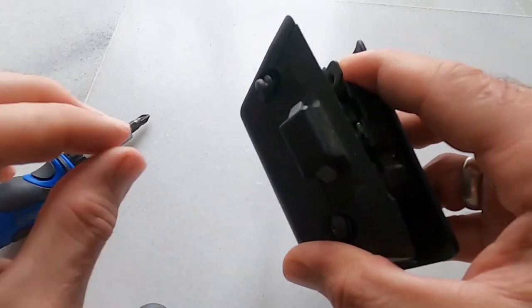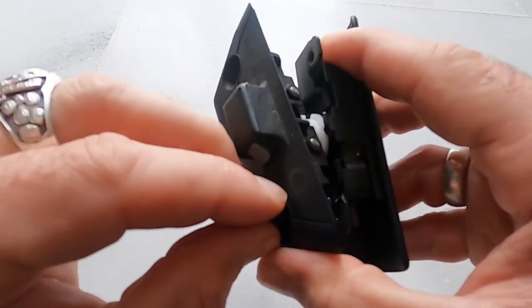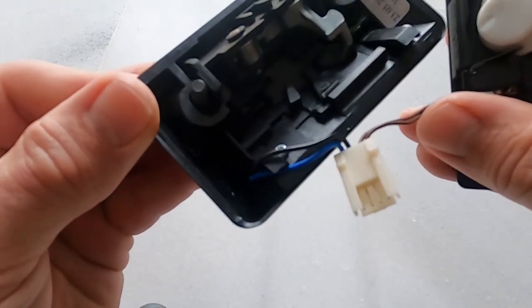Because with the BMW E46 Convertible, it operates off the electronics with the central locking. So as you can see, you have got your plug.